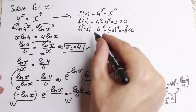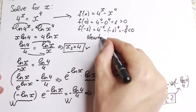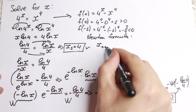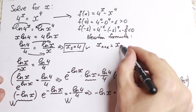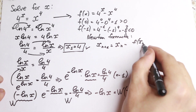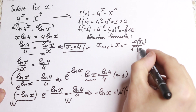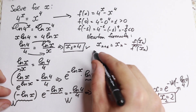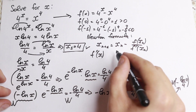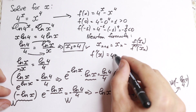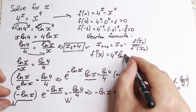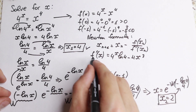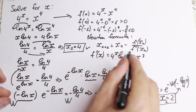How can we find it? Using Newton's formula. The Newton formula is: x_(n+1) equals x_n minus f(x_n) divided by f′(x_n). We need to find the derivative first. f′(x) equals 4 to the x times natural log 4, minus 4x cubed. Now we apply all these elements in our formula.